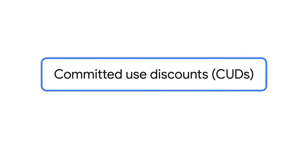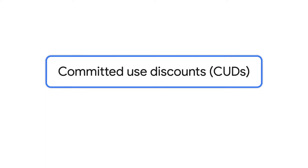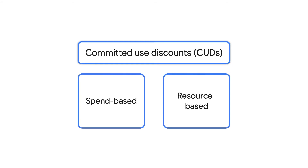First up, committed use discounts, or CUDs, provide discounted prices for certain cloud services in exchange for committing to a consistent amount of usage for a one- or three-year period. There are two types of CUDs: spend-based and resource-based.